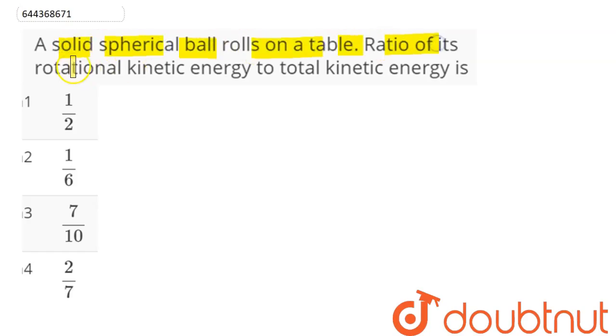Hence we can see here on a table, let's say there is a solid sphere which is undergoing pure rolling. So for pure rolling, we can see here that for a solid sphere whose moment of inertia is equal to 2/5 mr², where m is the mass and r is the radius of the sphere.